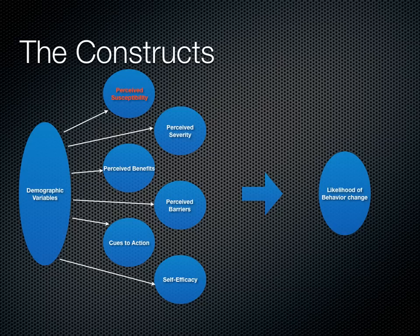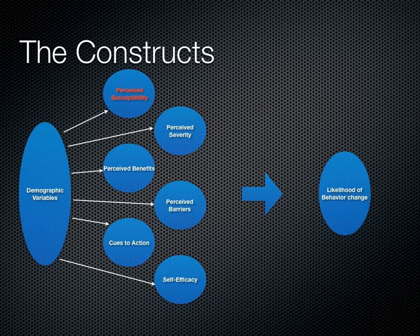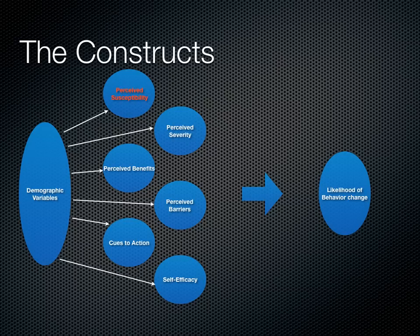Here is a diagram I made showing the six constructs. The demographic variables — whether you're targeting a child or an adult, whether it's quitting smoking, curbing drug abuse, or wearing a seatbelt — the demographic will be completely different. As the arrows show, differences in demographics affect each construct and how you use them to apply the theory. If all constructs are in place and the program works, we should achieve behavior change. The final outcome on the right side is the likelihood of behavior change.